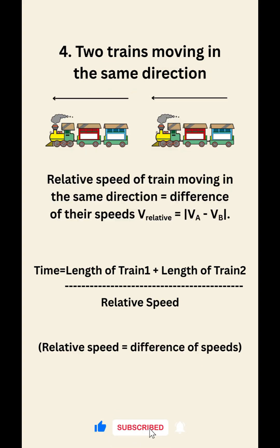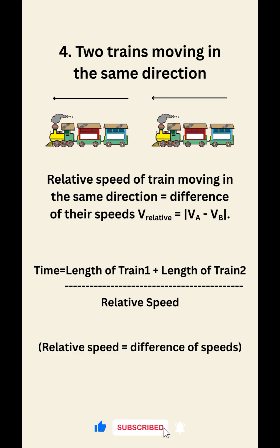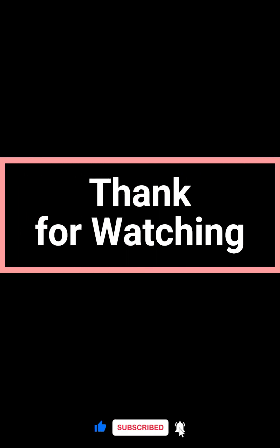Two trains in the same direction. When two trains move in the same direction, subtract the speeds. So the formula is: time equals length 1 plus length 2, divided by speed difference. Quick revision done. Follow for more math shortcuts.